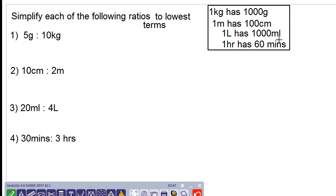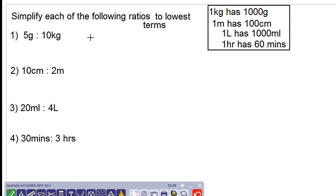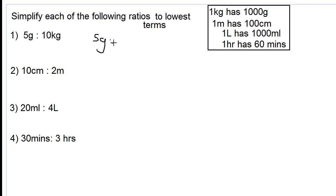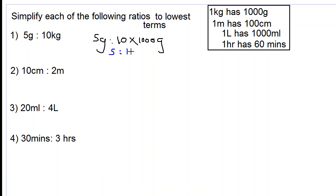Let's look at the first ratio of 5 grams to 10 kilograms. This is the same as 5 grams to 10 times 1000 grams. So we have 5 to 10,000. Let's simplify this now. 5 into 5 is 1, 5 into 10,000 is 2000. This is the answer for number one.